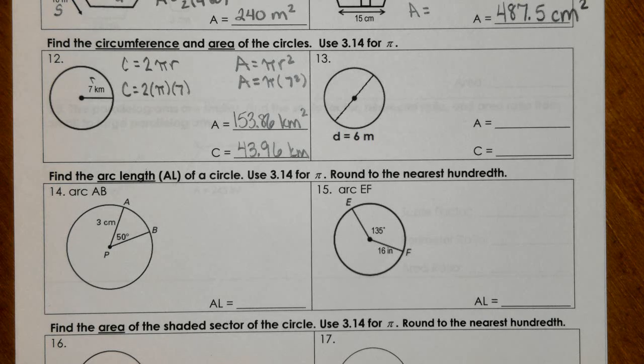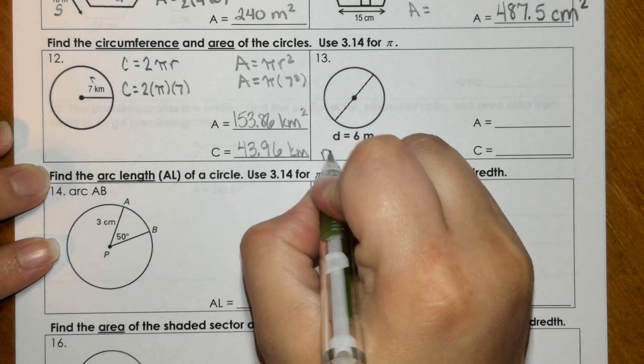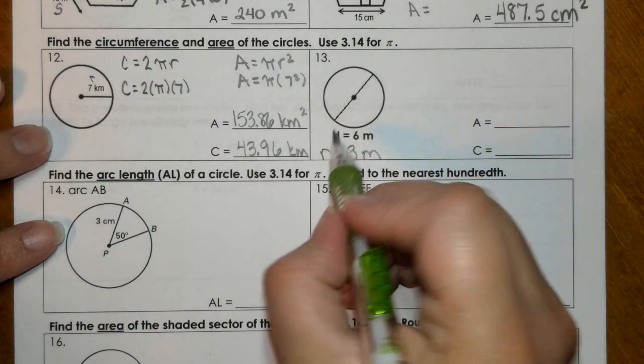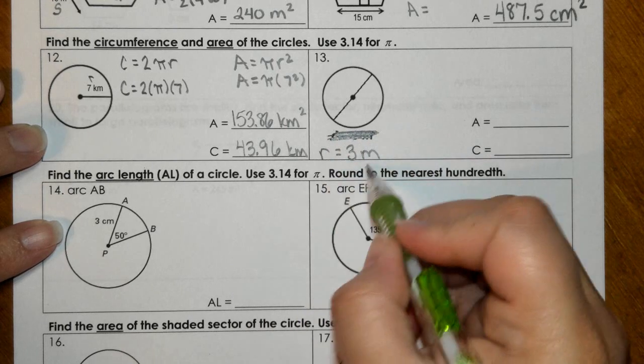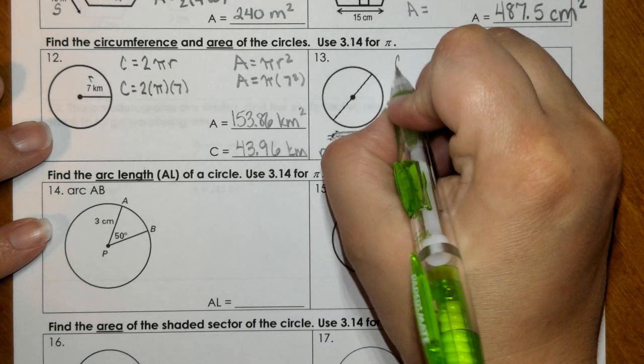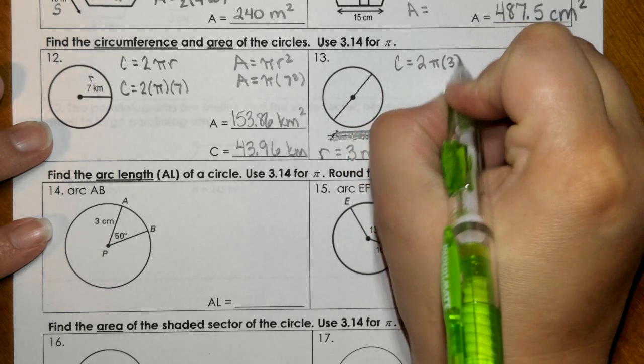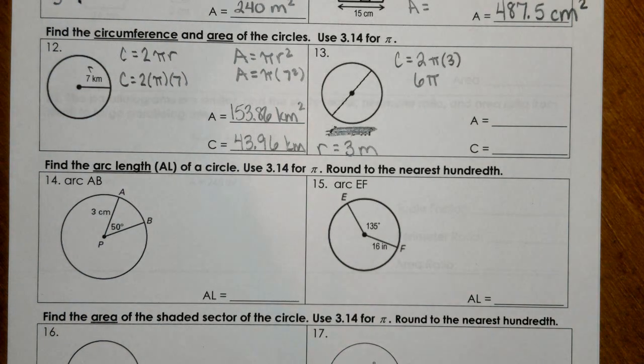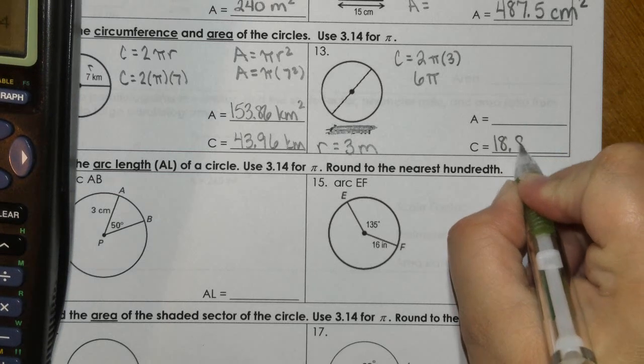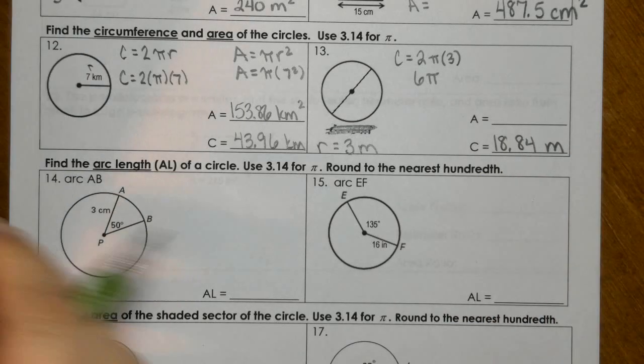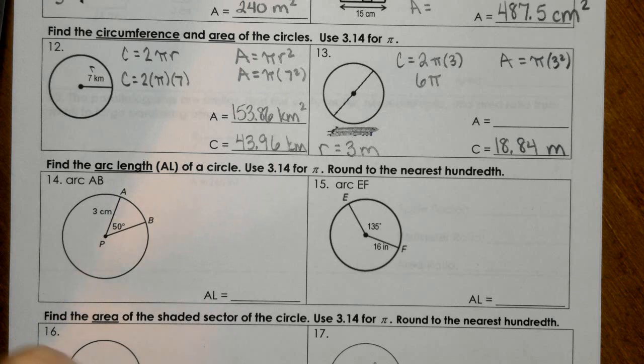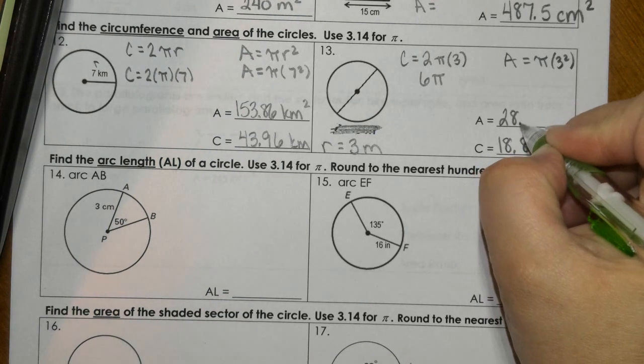The only thing really different about 13 is that in this case, I'm giving you the diameter instead of the radius. So you do have to make sure you identify the radius as 3. You can use diameter still if you want for the circumference formula, but I would just know that I'm dealing with that r as 3. So circumference, I've got 2π times 3, so 6π, 6 times 3.14. And then for the area, π times 3 squared, so 9 times 3.14, 28.26.